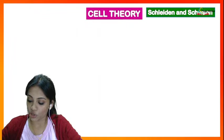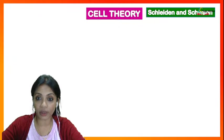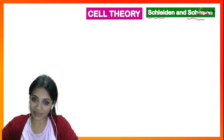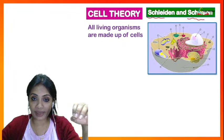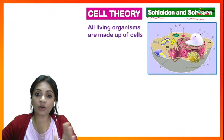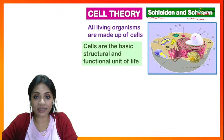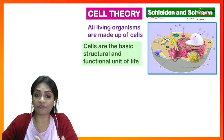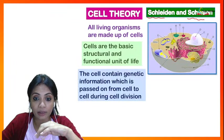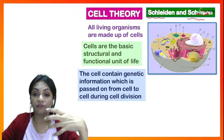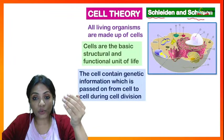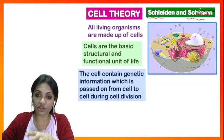Schleiden and Schwann proposed cell theory with the following points: all living organisms are made up of cells; cells are the basic structural and functional unit of life; cells contain genetic information in the form of DNA or RNA; and when the cell divides, that genetic information is passed from the parent cell to the daughter cell.